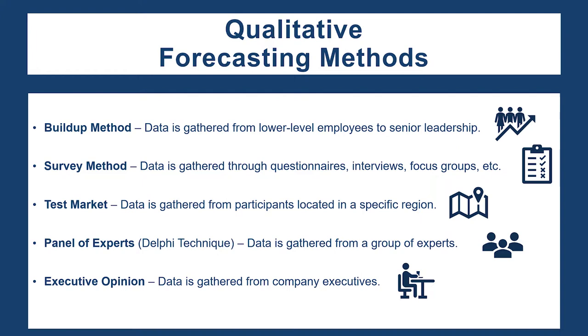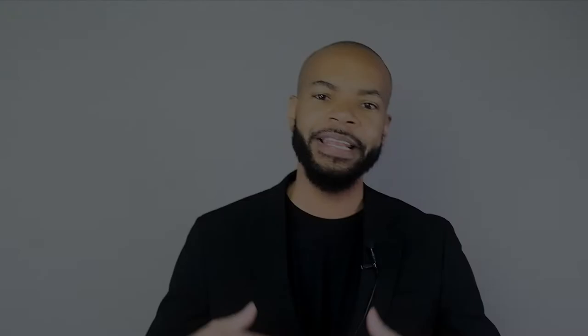The first qualitative method is the build-up method. This is where we start at the bottom of an organization and solicit information all the way up the chain. You can start in a warehouse with a blue-collar worker and work your way up to senior executives, hitting all middle management in between, to determine what a forecast for a particular product may be.